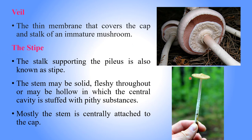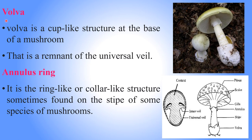The stipe, otherwise called the stem or stalk, helps to support the cap or pileus. The volva is a complex structure at the base of the mushroom. The annulus ring is shaped like a ring or collar and is present on the stem.